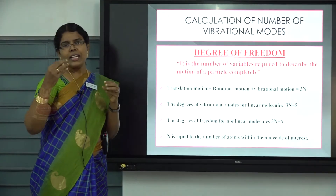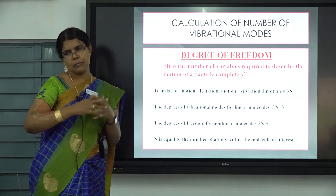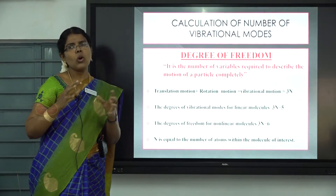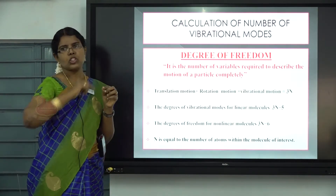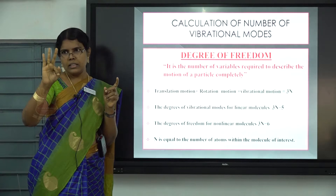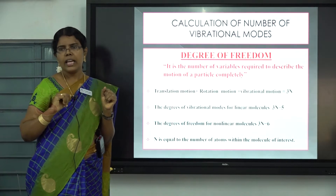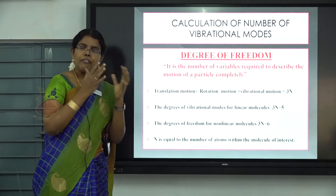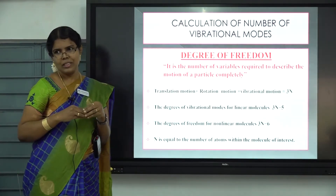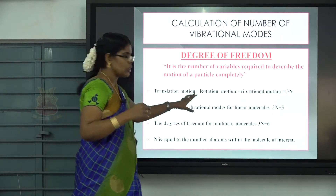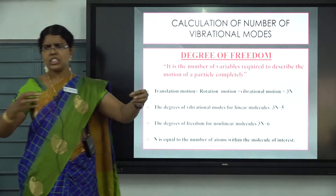Degrees of freedom is the number of coordinates required to represent the position of a particle in a system. In a Cartesian coordinate system, a particle moving in 3D space requires 3 coordinates, so degrees of freedom is 3. If a molecule contains n atoms, degrees of freedom equals 3n, and the possible motions are translational, rotational, and vibrational.